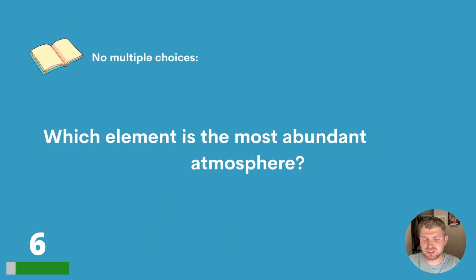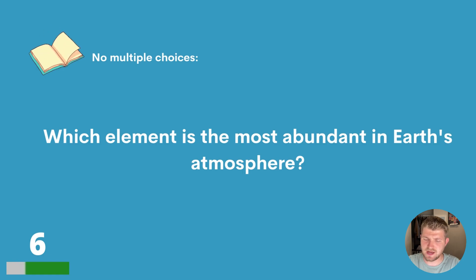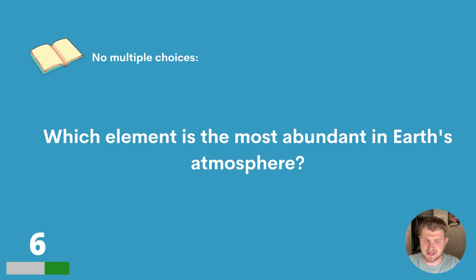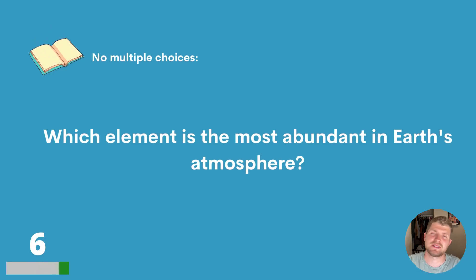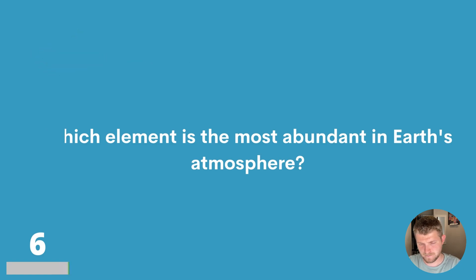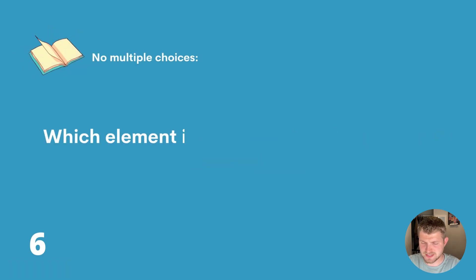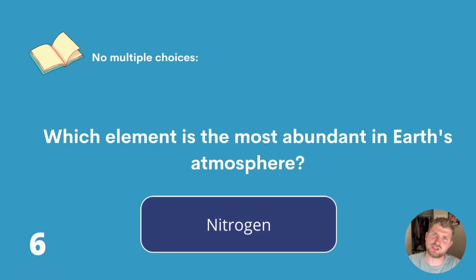Question six. Which element is the most abundant in Earth's atmosphere? There's no multiple choices again — can you give us the answer? The answer is nitrogen.